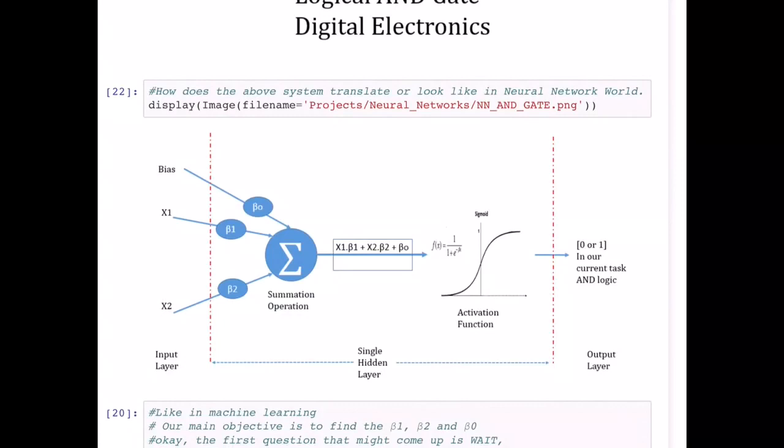All these calculations are put inside something called layers. If you have more and more complex things, we'll have more and more layers. But in this particular case where it is only an AND gate, we are good with a single hidden layer. What does this layer basically do?